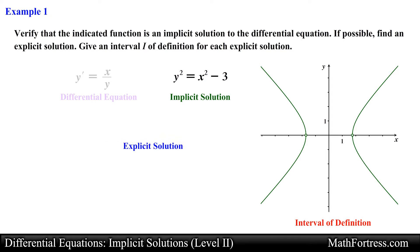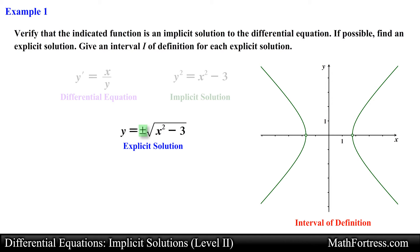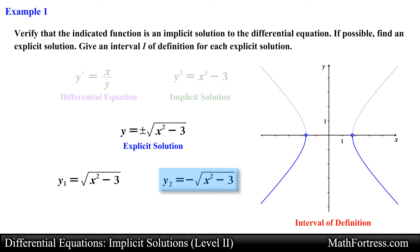Next let's check and see if we can find an explicit solution by solving for the variable y and obtaining an expression in terms of x. Looking at the implicit solution, solving for y is fairly straightforward — it's just a matter of taking the square root of both sides. Doing that we obtain y equals positive or negative the square root of x squared minus 3. Here we have two explicit solutions: one represents the upper and the other the lower half of the hyperbola. Notice that the domain of each explicit solution is defined by the inequality: the absolute value of x is greater than or equal to the square root of 3.